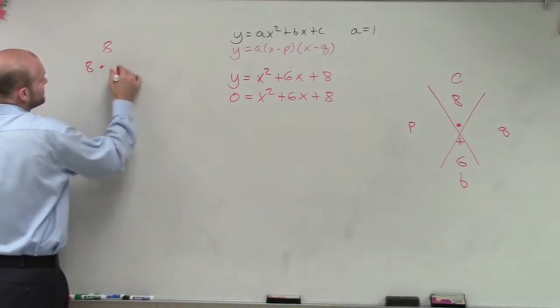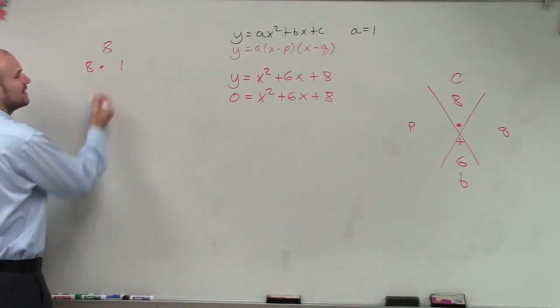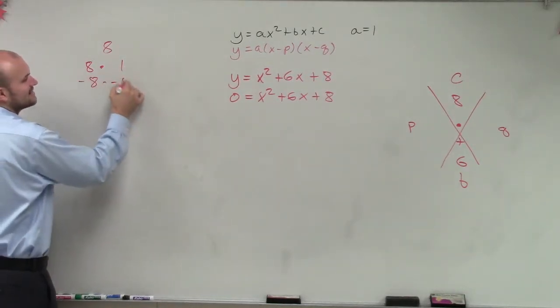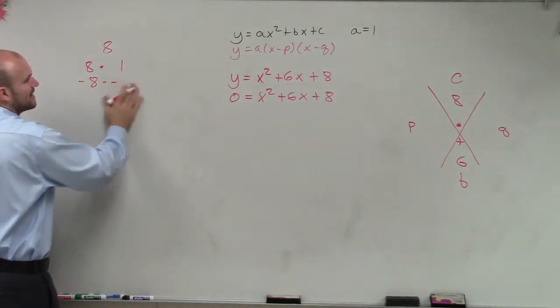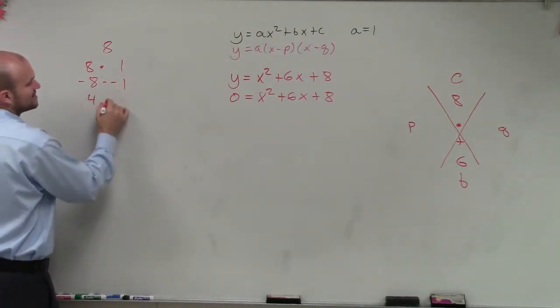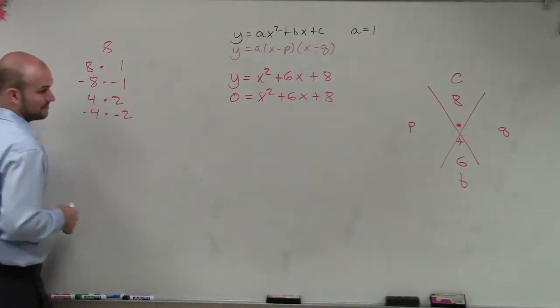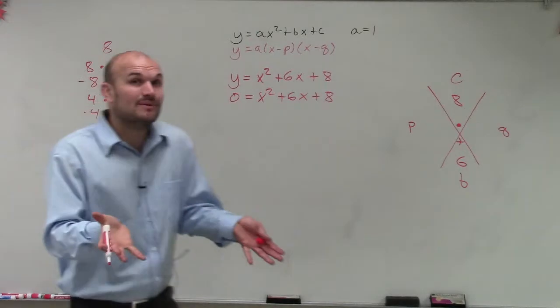Now this can sometimes get confusing because we'll forget about it sometimes. 8 times 1, but also negative 8 times negative 1. Not negative 8 times negative 8. 8 times 1 and negative 8 times negative 1. We could do 4 times 2 and negative 4 times negative 2. Right? And that's it. That's all we got.